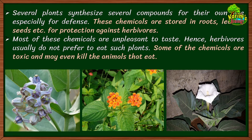Some plants synthesize several compounds for their own use, especially for defense. They convert waste material into chemical compounds and store them in roots, leaves, and seeds. These chemicals are unpleasant to taste, so herbivorous animals cannot eat the leaves of such plants. The chemicals are toxic and may even kill animals that consume them — this is how plants convert waste material into protective toxins.